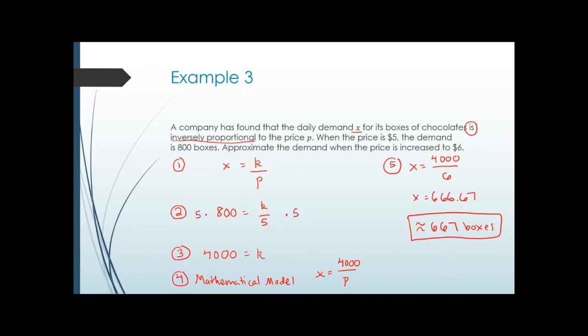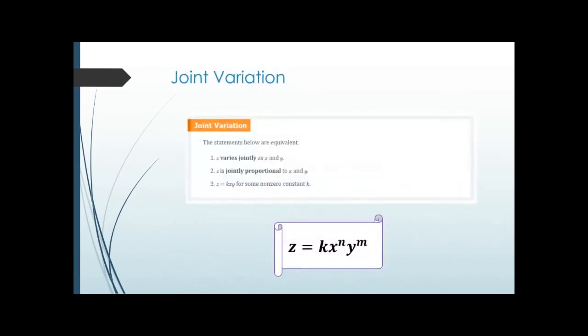Joint variation is where things are both increasing — it's direct variation but with multiple variables. The equivalent statements are: 'z varies jointly as x and y,' 'z is jointly proportional to x and y,' or 'z equals k times xy' for some non-zero constant k. You can also have exponents on x and y, so pay attention to the wording, but everything here is multiplied together.